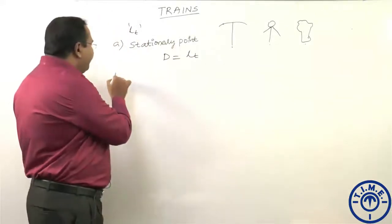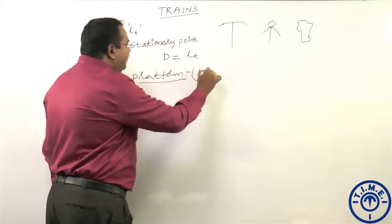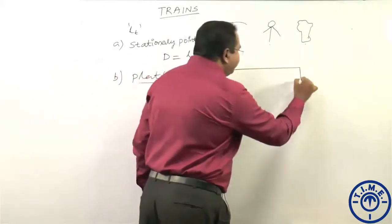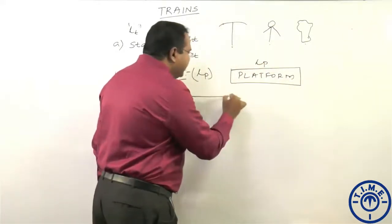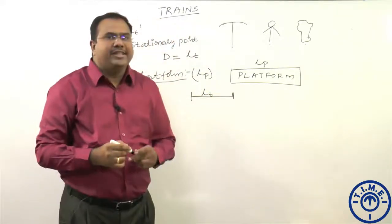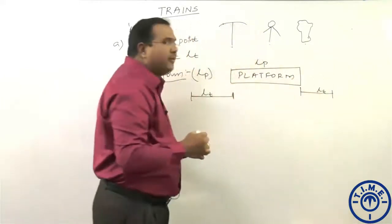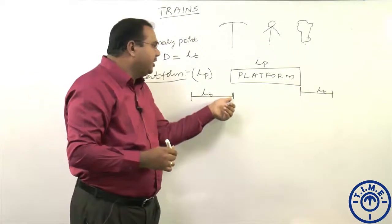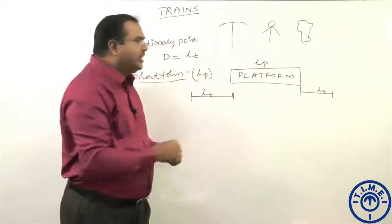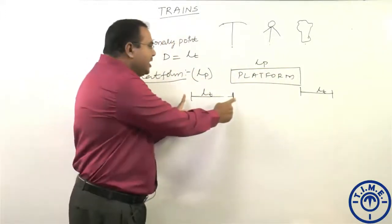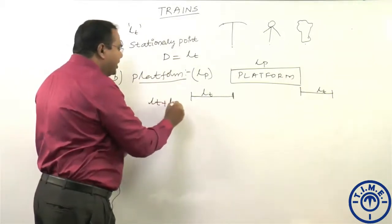When a train of length Lt is crossing a platform of length Lp, the distance covered is not negligible. The train has crossed the platform only when the endpoint of the train passes the far end of the platform. So the distance covered is the length of the train plus the length of the platform: Lt plus Lp.